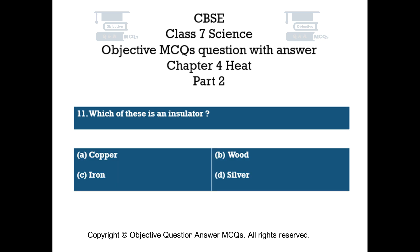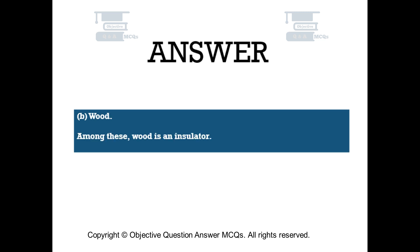Question number 11. Which of these is an insulator? Option A: copper, Option B: wood, Option C: iron, Option D: silver. The right answer is Option B — Wood. Among these, wood is an insulator.